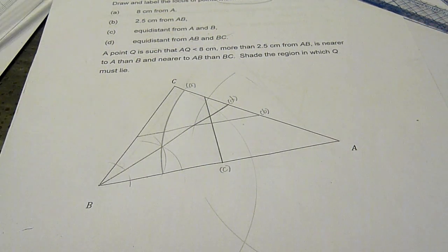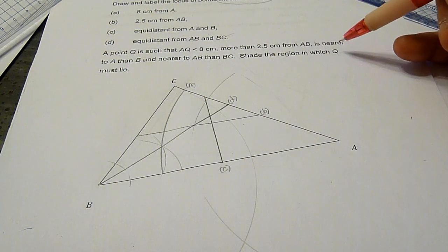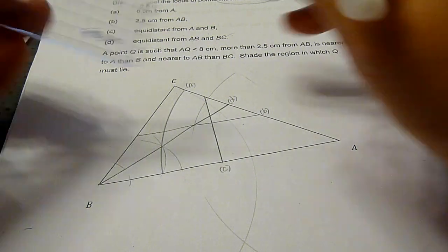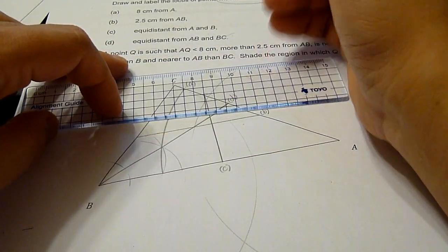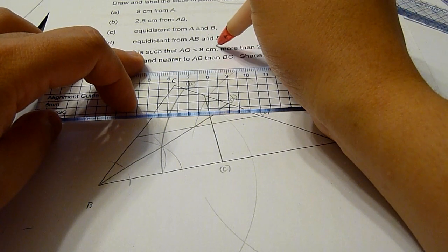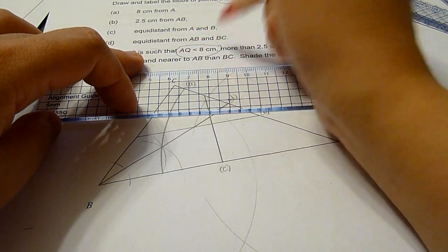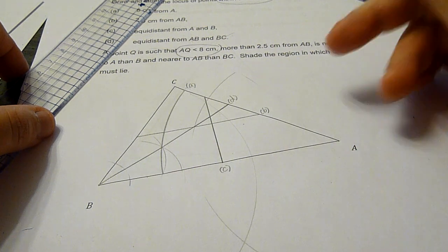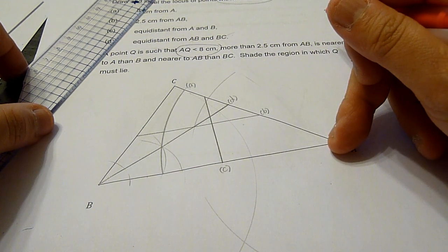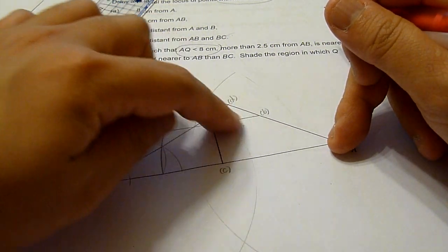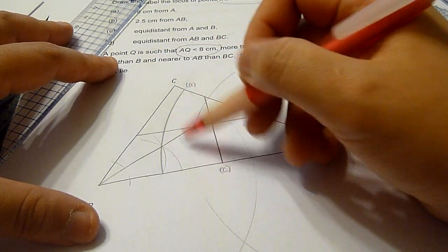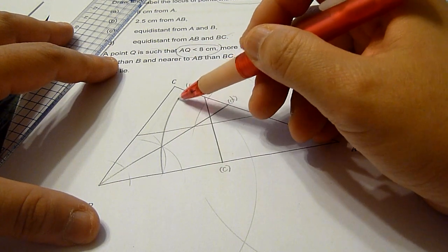Next, we are required to identify the region where Q is. First of all, Q is such that AQ is less than 8 cm. Now, AQ is less than 8 cm means it will be within this region, which is below this arc.